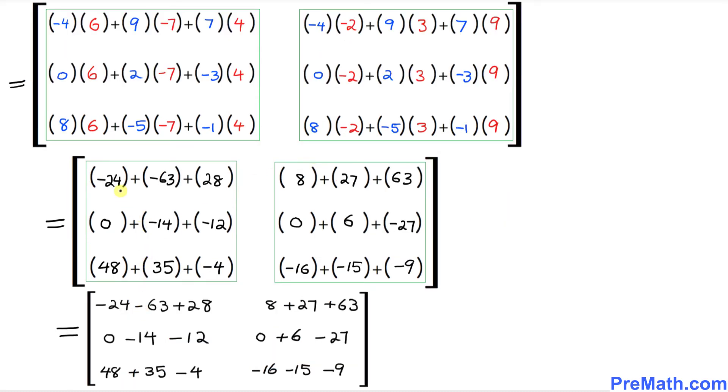And in the next step, I removed the parentheses. I took care of the parentheses. And I put down this negative 24, negative 63, positive 28. Everything, I just filled it out over here.